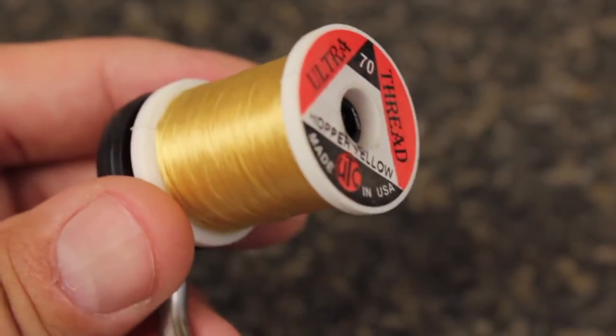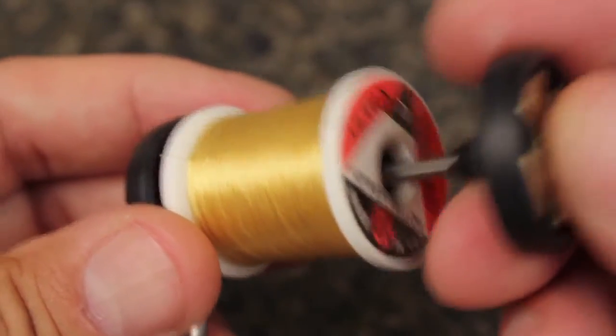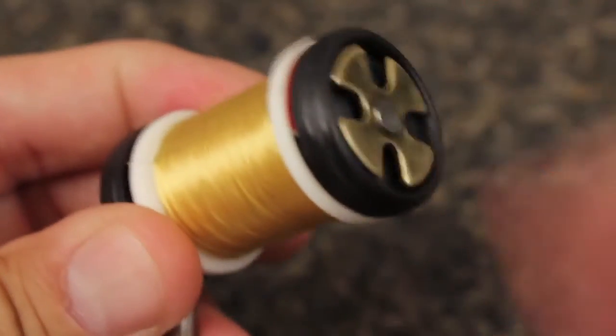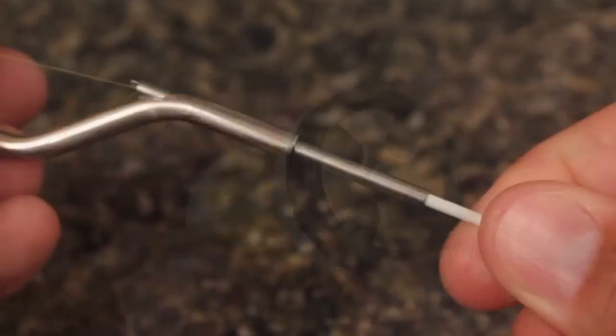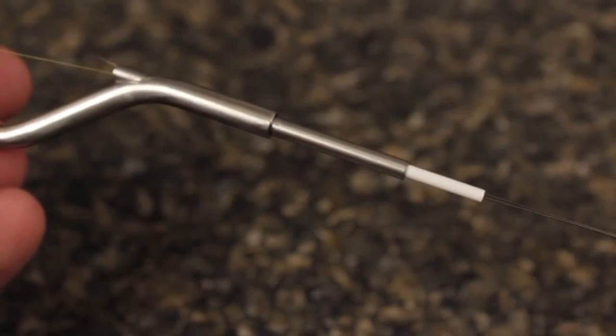Slip on any standard-sized thread spool. Reinsert the drag assembly and give the tensioning knob a clockwise spin until it starts to click. Then run the thread through the bobbin tube.